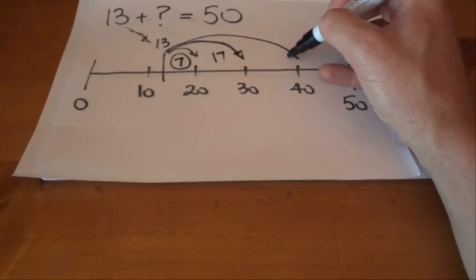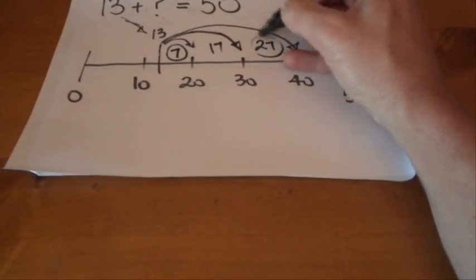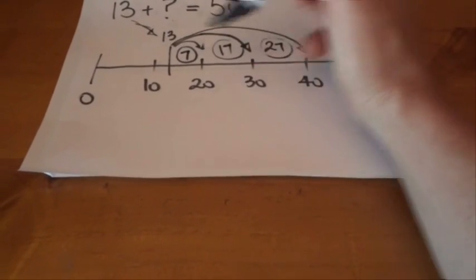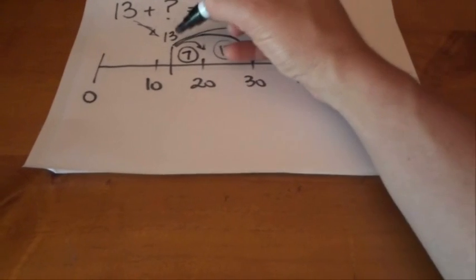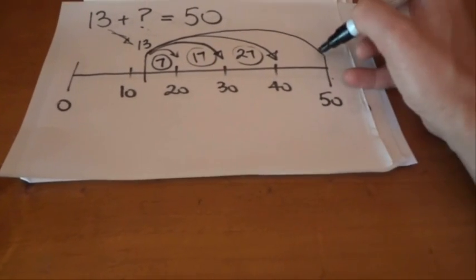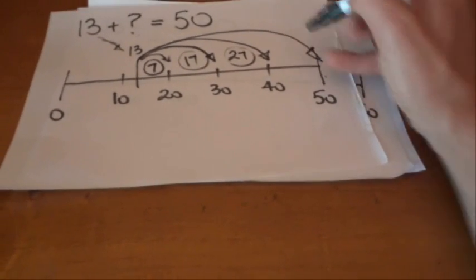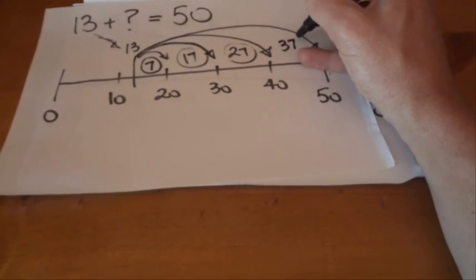13 plus what gives you 40? 27. Just add on 10 to the 17. So therefore, 13 plus what gives you 50? It's got to be 37.